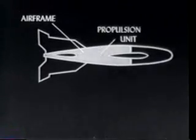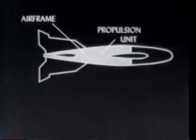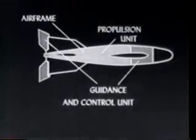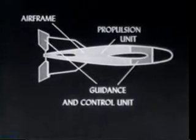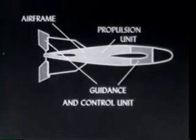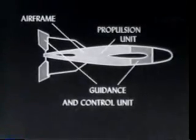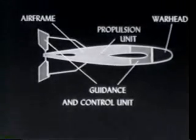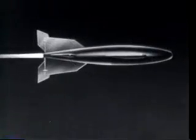Every powered guided missile has four basic components. First is its airframe, which holds the missile assembly. The second is the propulsion unit. The third is the guidance and control unit. This unit, usually electronically activated, is the brain of the missile. The final component is the warhead. These components are basic, regardless of the speed for which the missile is designed.